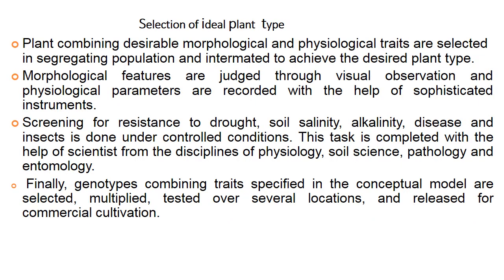The fourth step is selection of ideal plant type. Plants combining desirable morphological and physiological traits are selected in segregating populations. Morphological features are judged through visual observation, while physiological parameters are recorded using sophisticated instruments. Screening for resistance to drought, soil salinity, alkalinity, disease, and insects is done under controlled conditions with scientists from physiology, soil science, pathology, and entomology. Finally, genotypes combining traits specified in the conceptual model are selected, multiplied, tested over locations, and released for commercial cultivation.